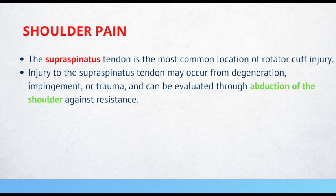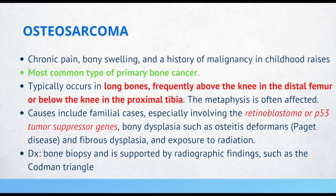Osteosarcoma. Patients have chronic pain, bony swelling, and a history of malignancy in childhood, which would raise suspicion of osteosarcoma. It is the most common type of primary bone cancer, typically occurring in long bones, frequently in the distal femur above the knee or proximal tibia below the knee. The metaphysis is often affected. Causes include familial cases involving the retinoblastoma or P53 tumor suppressor genes, bony dysplasia such as Paget's disease, fibrous dysplasia, and exposure to radiation. Diagnosis requires bone biopsy and is supported by radiographic findings such as Codman's triangle.